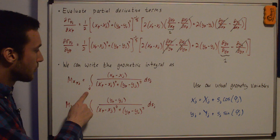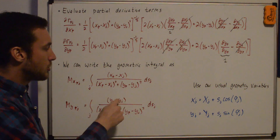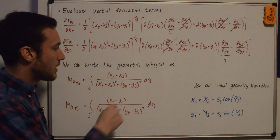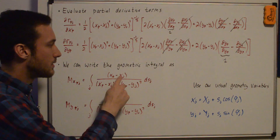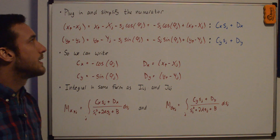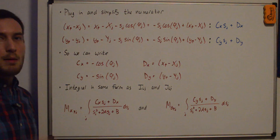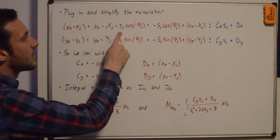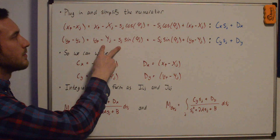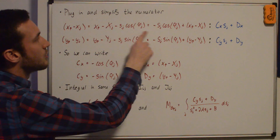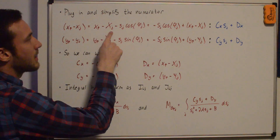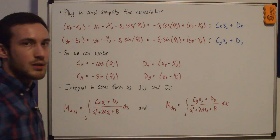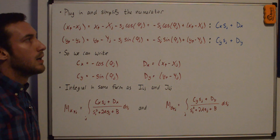Since we're integrating over the Jth panel, we substitute for XJ and YJ using the usual geometry variables from my IIJ video, expressing them in terms of the SJ variable. Plugging in for XJ and YJ in the numerators gives XP minus (XJ_capital minus SJ·cos(phi_J)) for X and similarly for Y. Rearranging, we get negative SJ·cos(phi_J) plus (XP minus XJ_capital), which is in the form CX·SJ plus DX — exactly the same form as the IIJ and JIJ integrands.